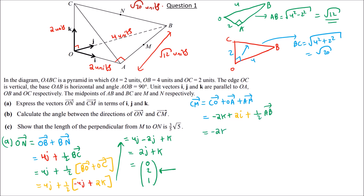So CM = −2K + 2I + half(AB). Vector AB = AO + OB. AO has length 2, direction negative I, so negative 2I. OB has length 4, direction J, so 4J. Thus half(AB) = half(−2I + 4J) = −I + 2J.